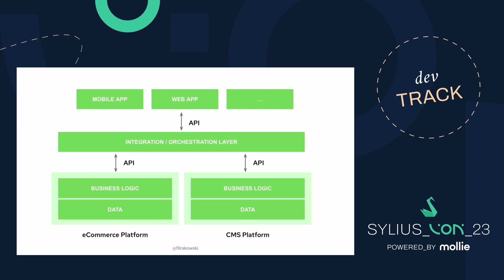When headless setups get more complicated, we usually have a middle layer responsible for managing those integrations. It is sometimes called an API gateway — there are a lot of fancy names these days like DXC or orchestration layer. Essentially, it is a layer which is responsible for communicating with all the backend platforms and then exposing one API for the frontend. The frontend only calls the integration orchestration layer, which in turn calls multiple APIs that often have different protocols like GraphQL or REST. It is also a way to find a common denominator for all of that.